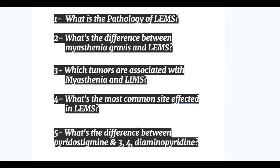Question one: what's the pathology of LEMS? Number two: what's the difference between myasthenia gravis and Lambert-Eaton syndrome? Number three: which tumors are associated with myasthenia and LEMS? Number four: what's the most common site affected in LEMS? And number five: what's the difference between pyridostigmine and 3,4-diaminopyridine?